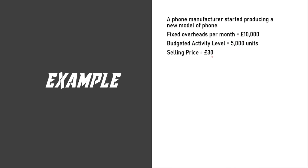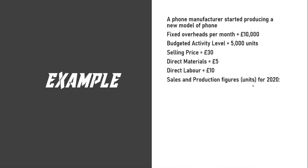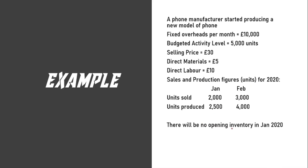Let's look at an example. A phone manufacturer started producing a new model of phone. Their fixed overheads per month is £10,000, their budgeted activity level is 5,000 units, their selling price is £30, direct materials £5, direct labour £10. Sales and production figures for 2020 are provided, there will be no opening inventory in January 2020, and the question asks us to prepare an absorption costing statement.